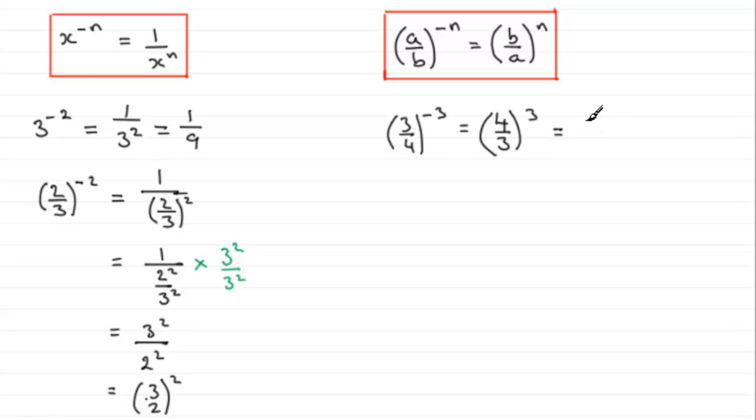4 cubed, 4 times 4 times 4 is 64, and 3 cubed is 3 times 3 times 3, which is 27. And I'd leave it like that, 64 over 27ths.